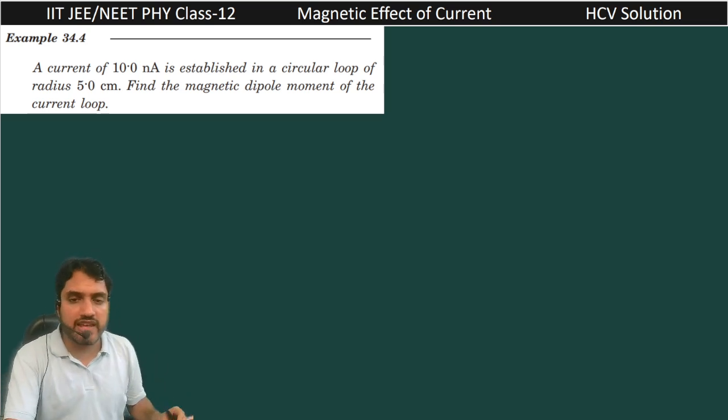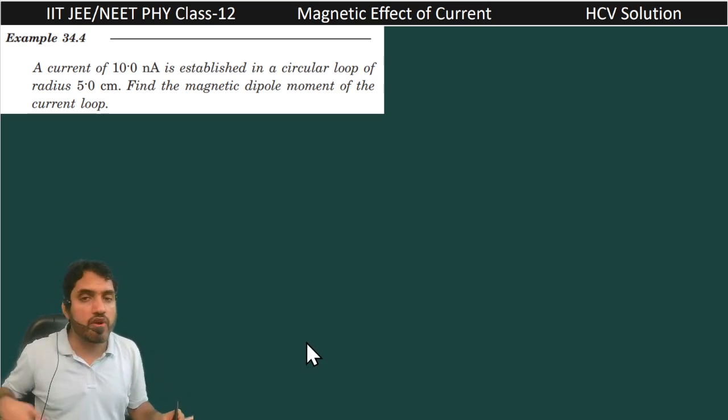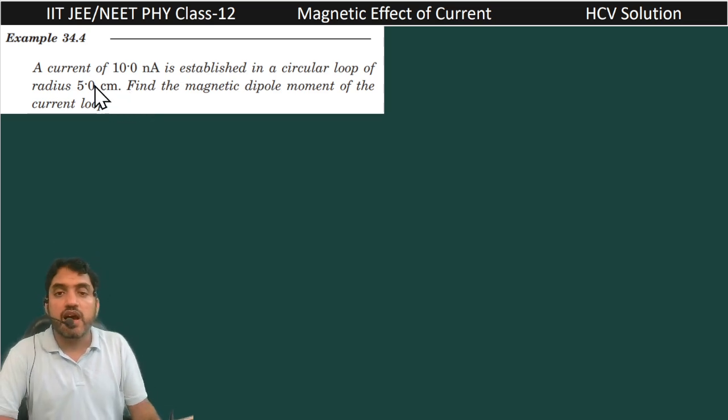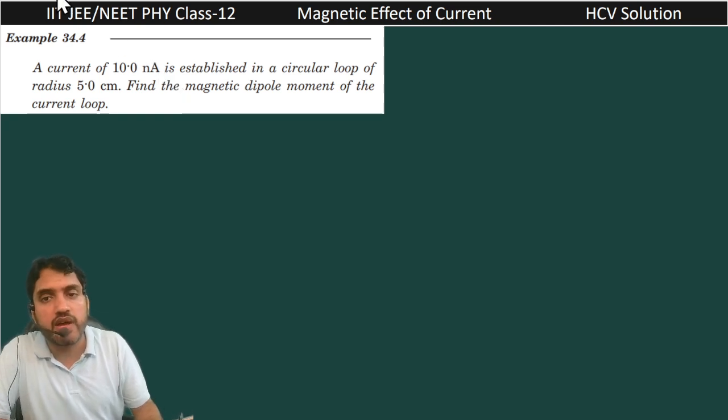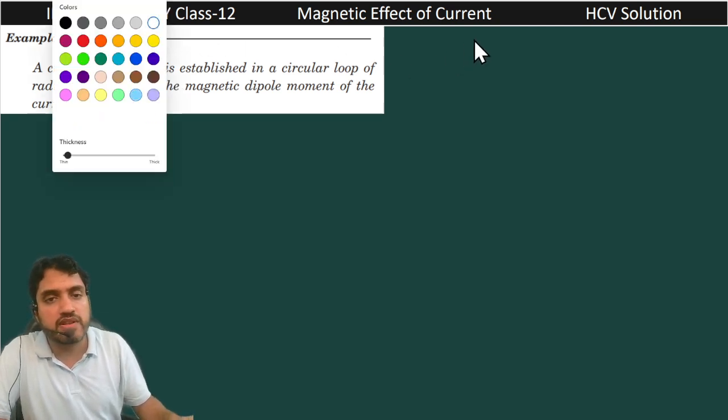So next question we are having example 34.4. In this question a current of 10 nano ampere is established in a circular loop of radius 5.0 centimeter. Find the magnetic dipole moment of current loop.